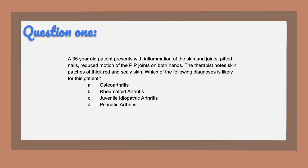For question one, the correct answer is D, psoriatic arthritis. The tip-off here is the thick, red, and scaly skin patches — that is a classic sign of psoriatic arthritis. If you were unsure about this question, go back and review the different types of arthritis.